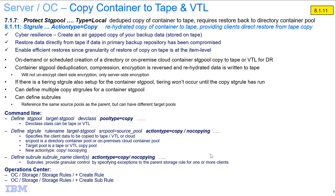Jonathan Cummings is going to be walking you through the command line options for defining a copy storage pool, defining the storage rule with the action type equals copy, and then defining sub rules. So with that I'll go ahead and turn it over to Jonathan.